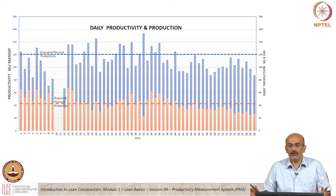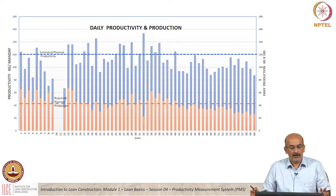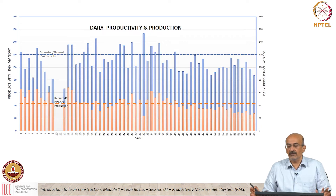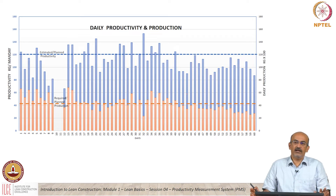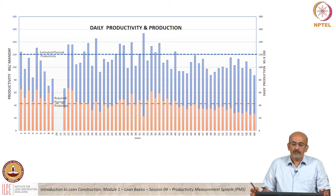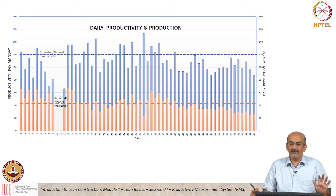The dotted lines indicate the estimated values — what we need. One is for productivity and the other is for production. The blue indicates the productivity level; the pink or red indicates the production level. What is your general comment on productivity from a daily perspective? There is a lot of variation, which may be expected from a daily graph. When we just look at it visually, production seems to be more over the graph, so we are visually saying it is generally okay.